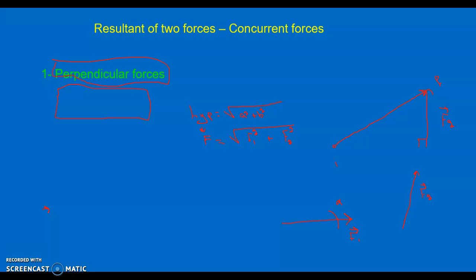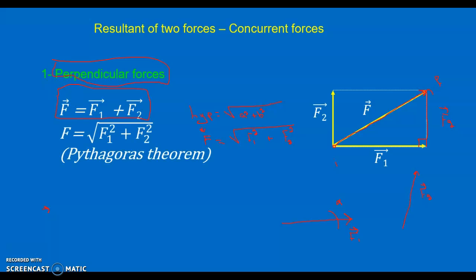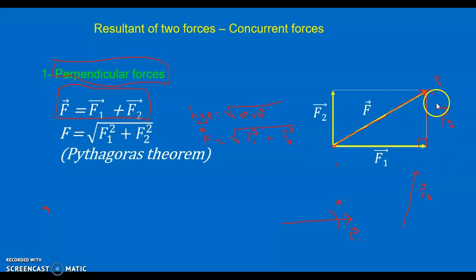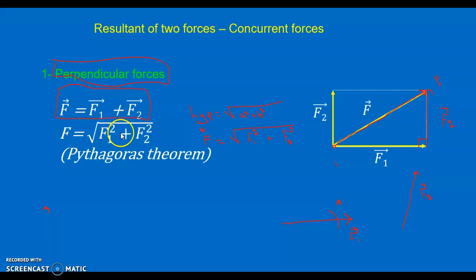If the two forces are concurrent but not collinear — for example, if F1 and F2 are perpendicular to each other — the general vector rule still applies: F = F1 vector + F2 vector. To find the magnitude, we translate F2 to be consecutive to F1 and get a right triangle where F is the hypotenuse and F1 and F2 are the legs. Applying the Pythagorean theorem, the magnitude of the resultant force equals the square root of F1 squared plus F2 squared.